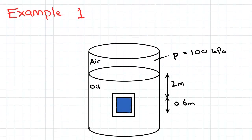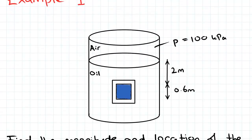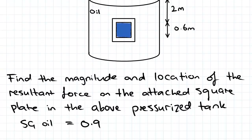Here's our example. We've got a pressurized tank with air on the top at a pressure of 100 kPa and below that there's oil. We're asked to find the magnitude and location of the resultant force on the attached square plate in the above pressurized tank. We've been asked to find the magnitude and location of the resultant force on only that plate.